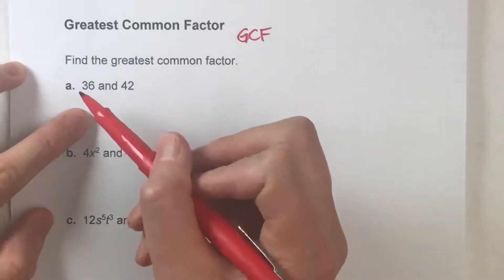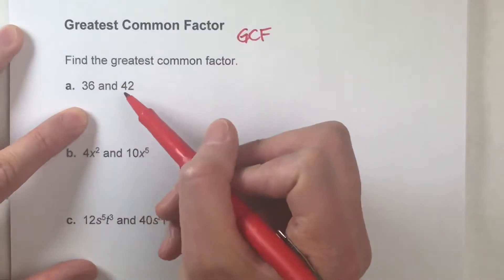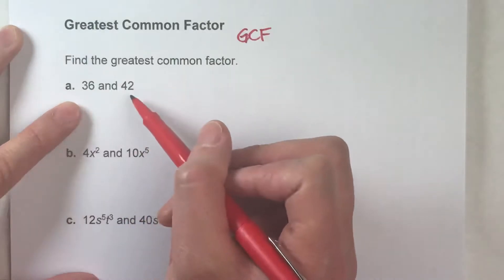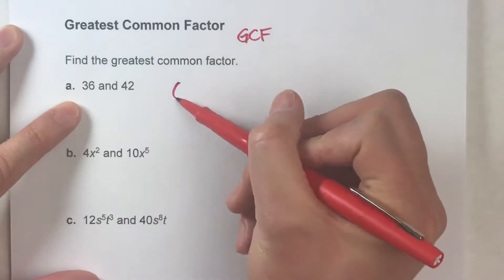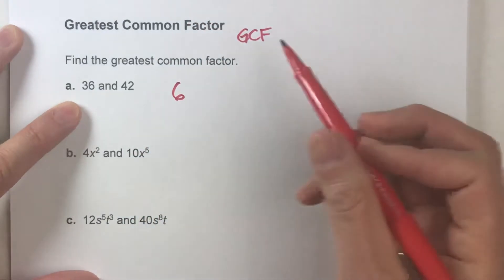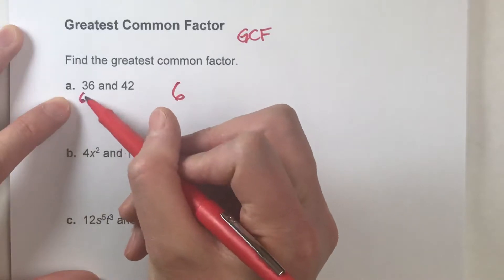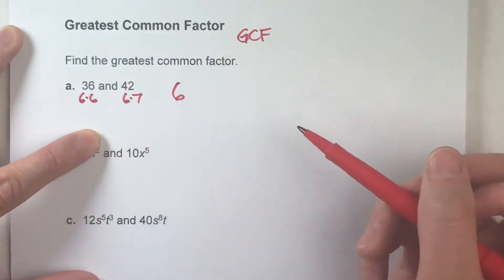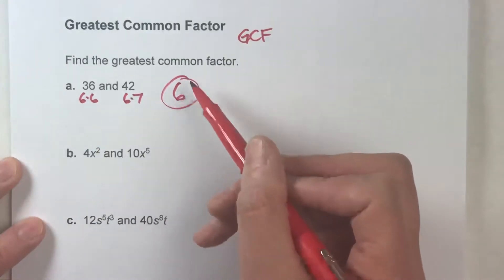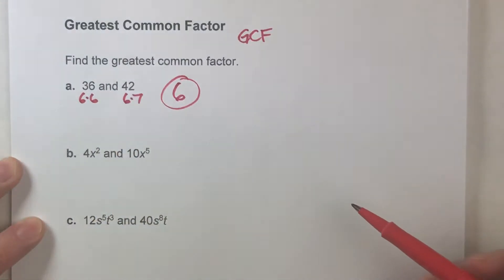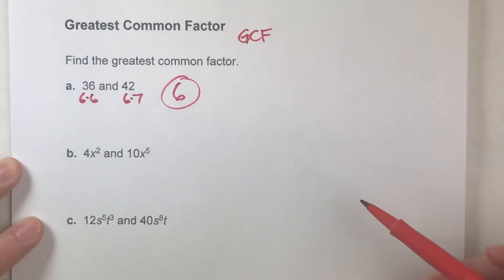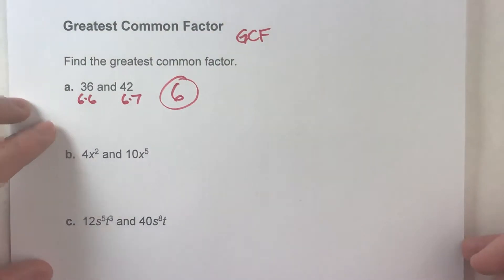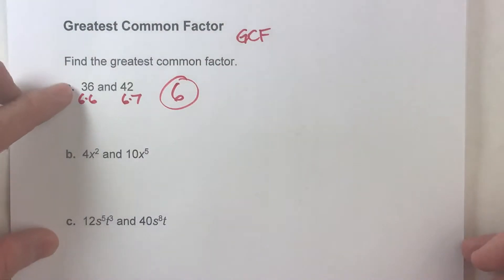For example, 36 and 42 — you have to ask yourself, what's the biggest number that will go into both of these? It happens to be 6, because 6 times 6 is 36, and 6 times 7 is 42, and there's no number bigger than 6 that will divide into both of them. It takes a little thinking; you have to know your times tables.